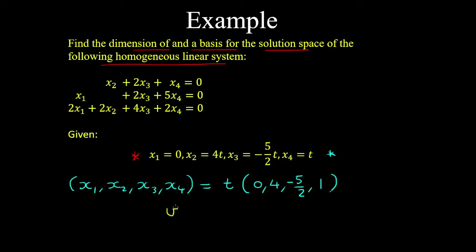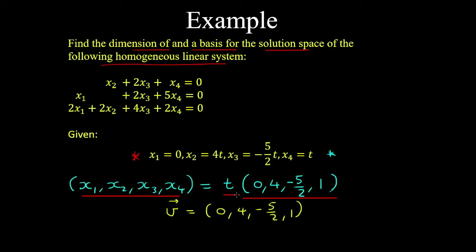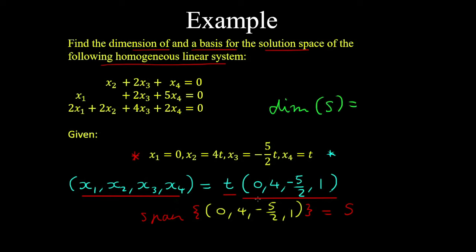Our basis consists of one vector with those components. For an arbitrary solution vector, we can express it as a linear combination of the basis vector — we're simply multiplying this vector by a scalar to obtain any vector in the solution space. Therefore the set comprising this vector spans the solution space of the homogeneous linear system, and the dimension of this solution space equals the number of basis vectors, which is 1. We can cover the entire solution space using just one vector.